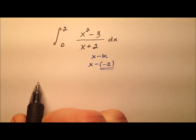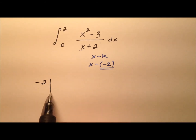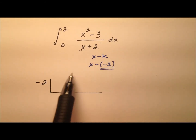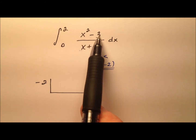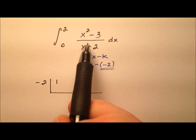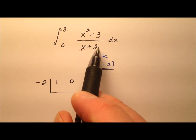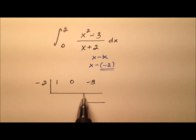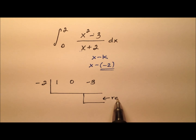Let's go ahead and set that division up. We have our negative 2 here, then we'll set up our division algorithm. Recall that synthetic division concerns itself with the coefficients and the constant. We start with the quadratic term coefficient, which is 1. There is no linear term, so we put a 0 as a placeholder, and then our constant is negative 3.